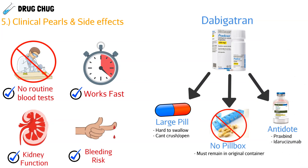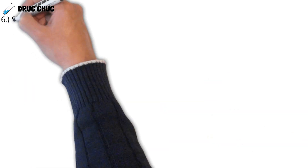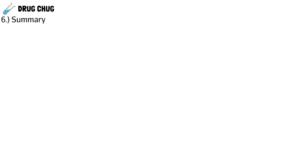The last clinical pearl is that dabigatran has an antidote. The antidote's name is Praxbind, and the generic is idarucizumab, a monoclonal antibody. It works specifically for dabigatran and works fast.